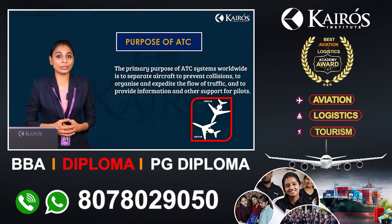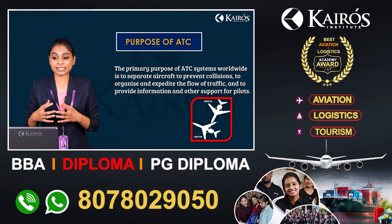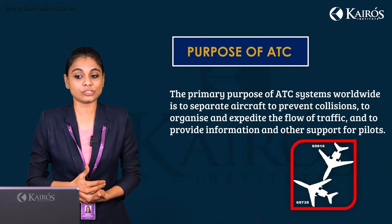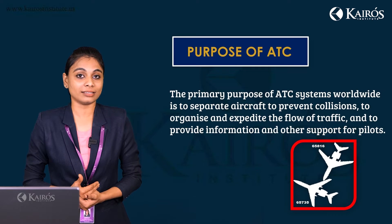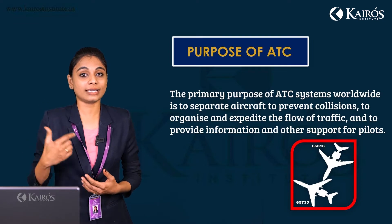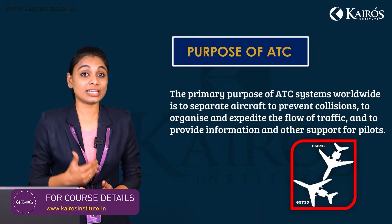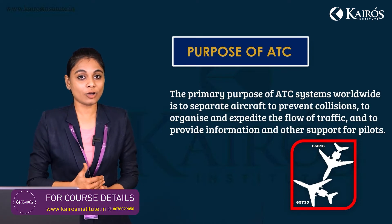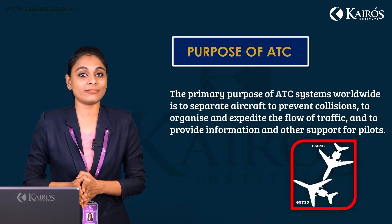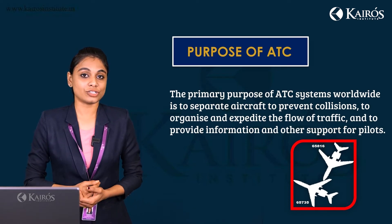In the next slide, we can see the purpose of ATC. The purpose is to prevent collisions, to organize and expedite the flow of traffic, and to provide information and other support to the pilots. Pilots generally communicate with the air traffic controllers through a radio system, where they receive instructions regarding landing, takeoff, and taxiing to the area where the aircraft is allotted for parking. This is the basic function of ATC.